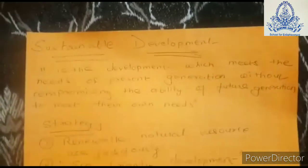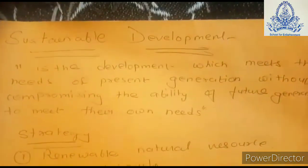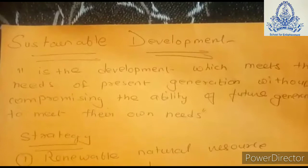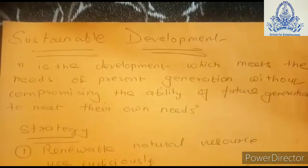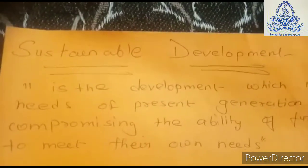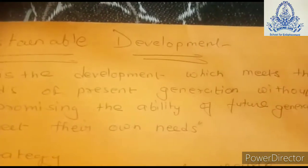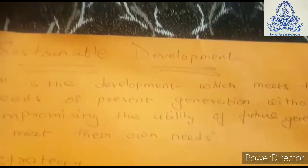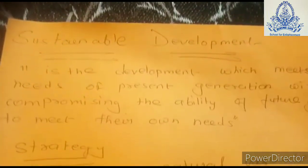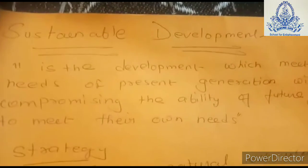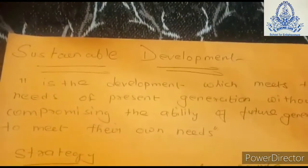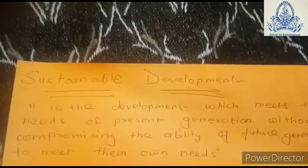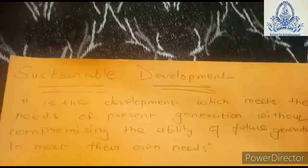The next topic of this chapter is sustainable development. Sustainable development is a development which meets the needs of the present generation without compromising the ability of future generations to meet their own needs. In simple terms, whatever resources we are using in the present generation should be maintained in such a way that they do not affect future generations. We always have the fear that the luxuries the present generation is enjoying may not be there for future generations.